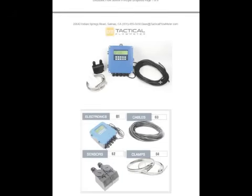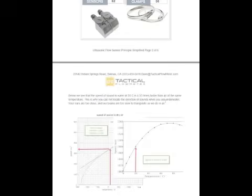This is what an ultrasonic clamp-on looks like. It consists of some electronics, cables that connect the electronics to the sensors, and the clamps that hold the sensors to the pipe on the outside of the pipe.